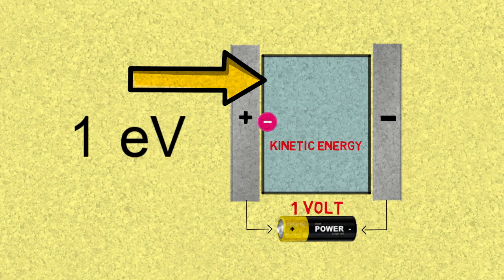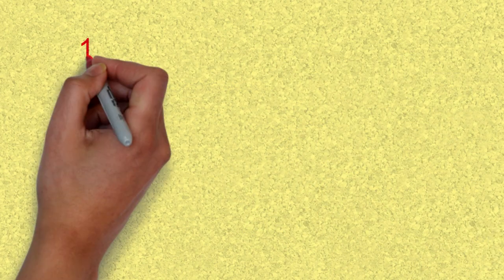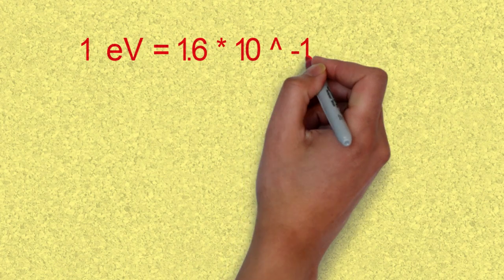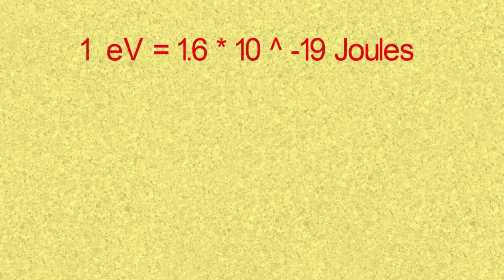Now an electron volt is a very small energy and it is equal to 1.6 times 10 to the negative 19 joules.